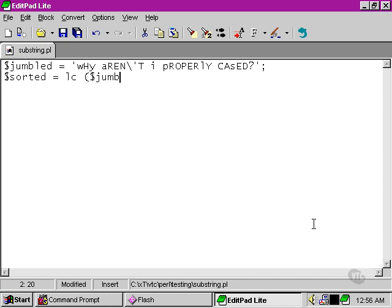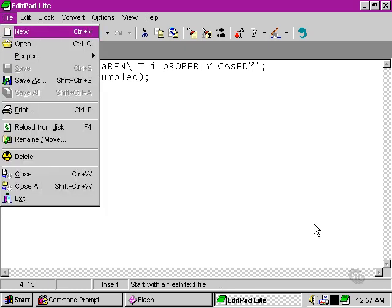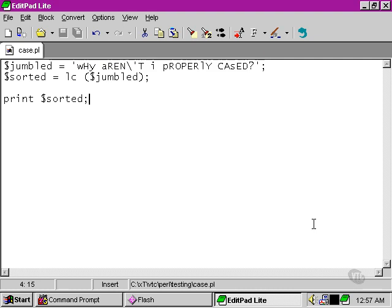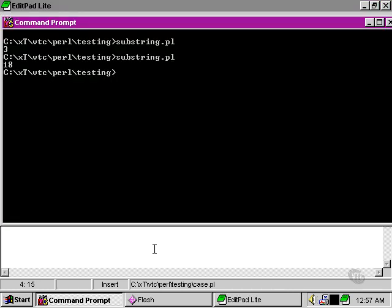And we're going to make another string by using the LC function, and then we're going to print that to the standard output. And we're going to call that case.pl. Let's see what happens when we run our script.